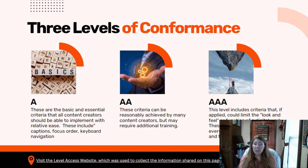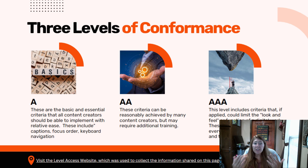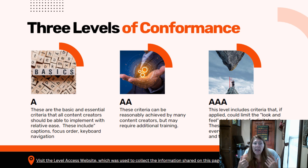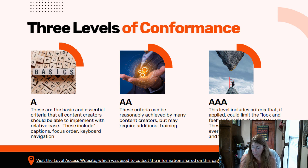AAA is the strictest and most difficult to achieve. It includes pre-recorded sign language, increased contrast ratio, an attached glossary, and the use of tooltips or a help section — so lots of extra costs there.